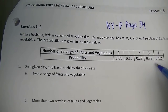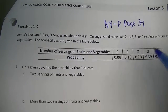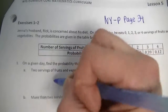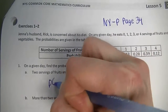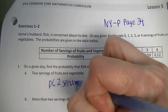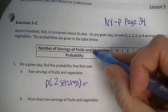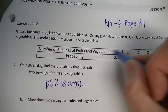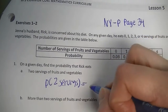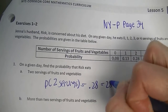On a given day, find the probability that Rick eats two servings of fruits and vegetables. We just look at the two-servings entry in the table: twenty-eight hundredths, which is twenty-eight percent.